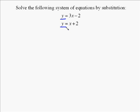On this one, we're just going to take the first equation, which tells me y equals 3x minus 2, and we're going to substitute that in for the y into the second equation. So the second equation we rewrite, instead of y, we write 3x minus 2, and then on the right side, we just leave it as x plus 2. We're not substituting anything for x.